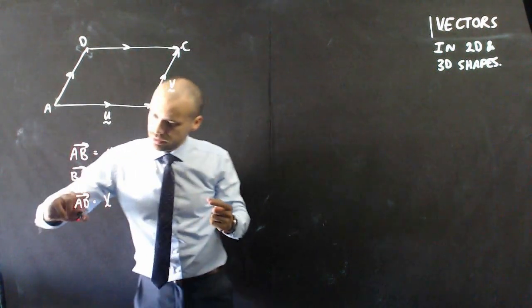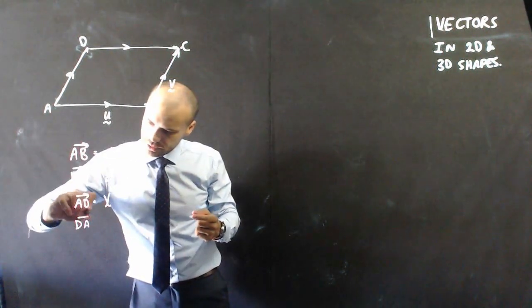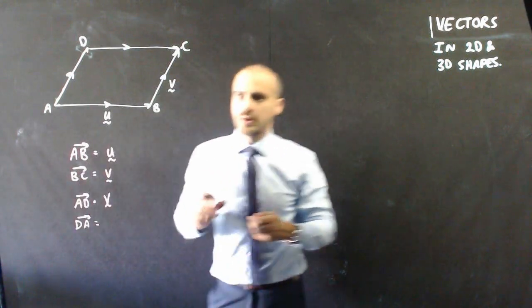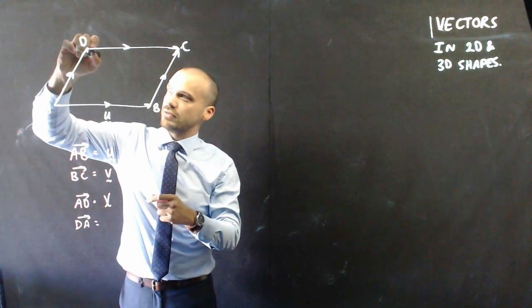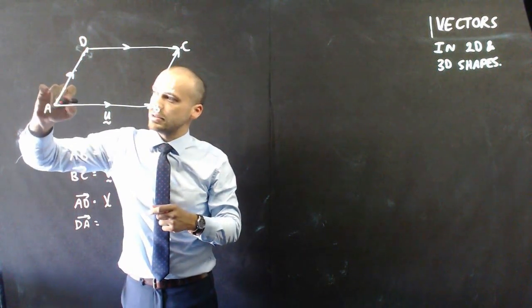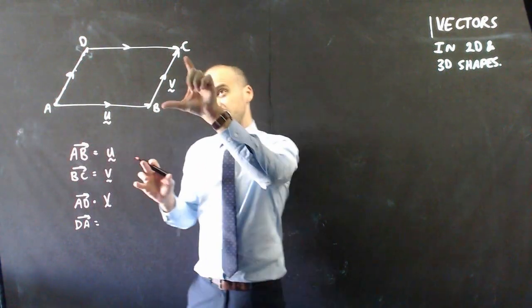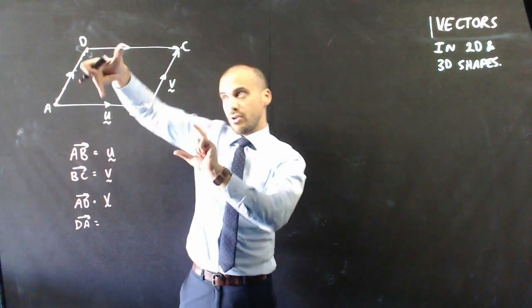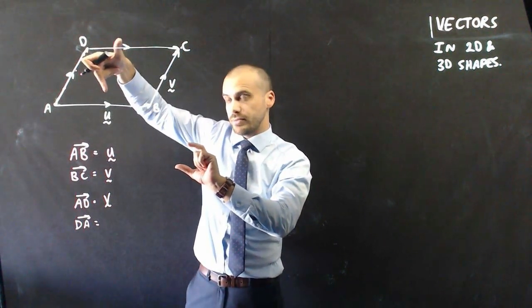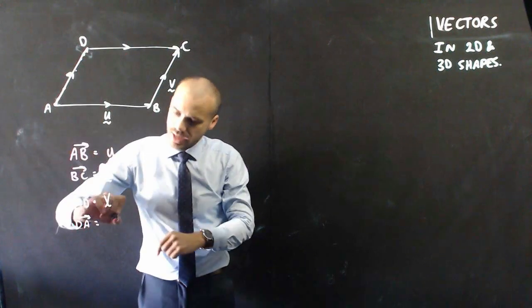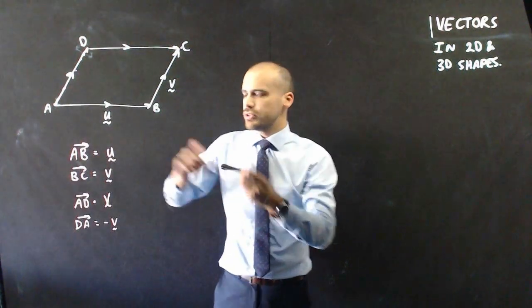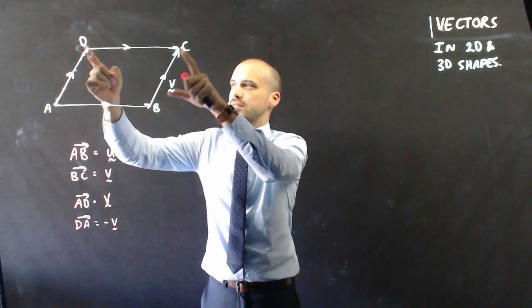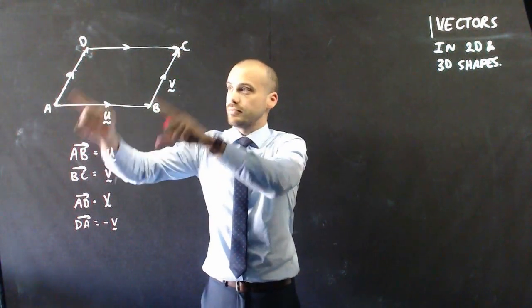Now, what about D to A? Alright, so looking at D to A that's a vector that's moving from here to here, it has the same magnitude as V but it has an opposite direction, so we can say that D to A is negative V. And we can do the same with U by talking about CD or DC.